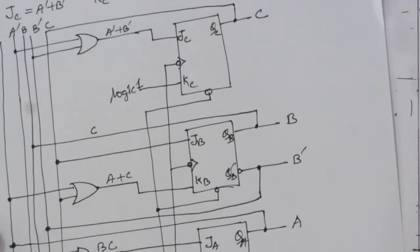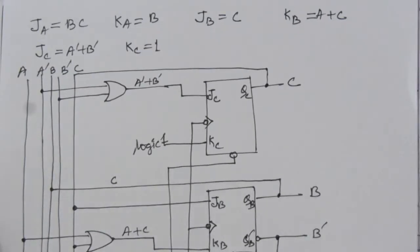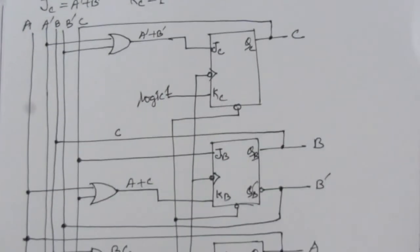This completes the circuit design for a counter with the repeated binary sequence 0, 1, 2, 3, 4, 5, and 6. Thank you for watching. If you have any questions, please put them in the comment section below.